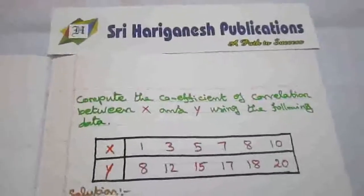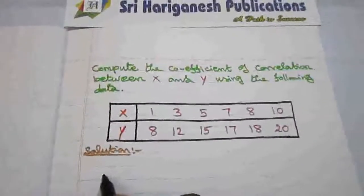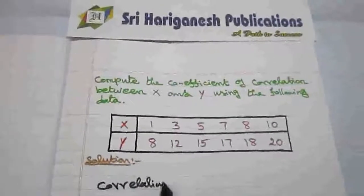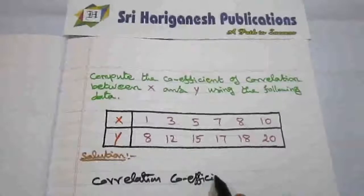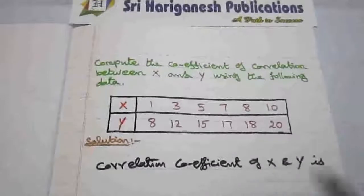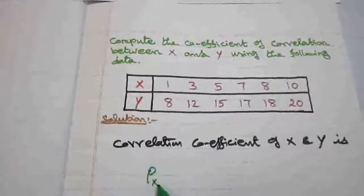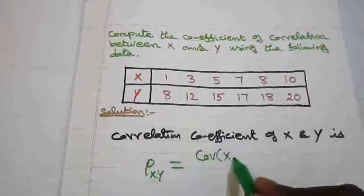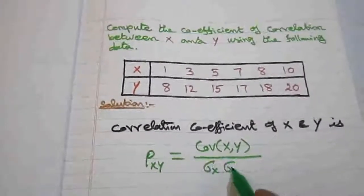The formula for correlation coefficient for discrete random variables: the correlation coefficient ρ(x, y) is equal to covariance of x, y divided by σx into σy.